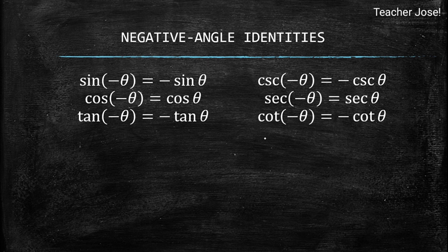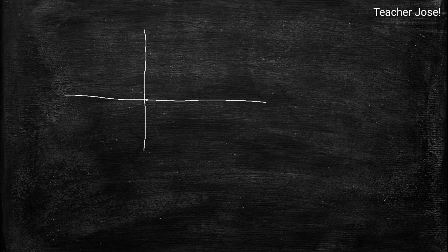So what's the concept behind negative angle identities? Let's look at an illustration. This is the Cartesian plane. We have the positive angle here in quadrant 1, and going here we have the negative angle, which is in quadrant 4.